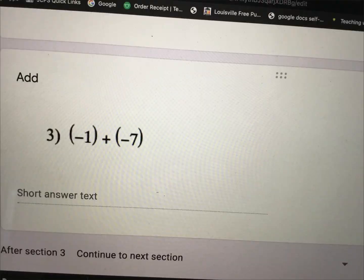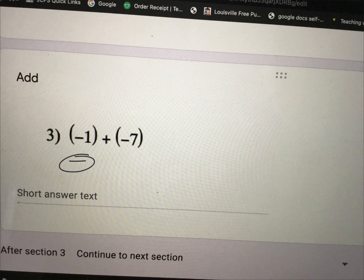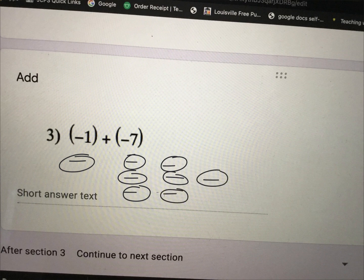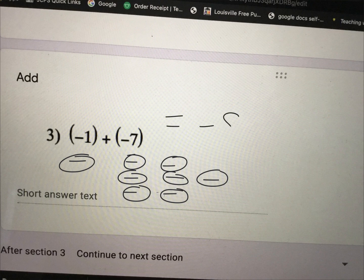Last but not least here I have a negative 1 and I'm going to combine it or add it with 7 more negatives. So if I have one negative put it together with 7 negatives that is going to be a total of negative 8.